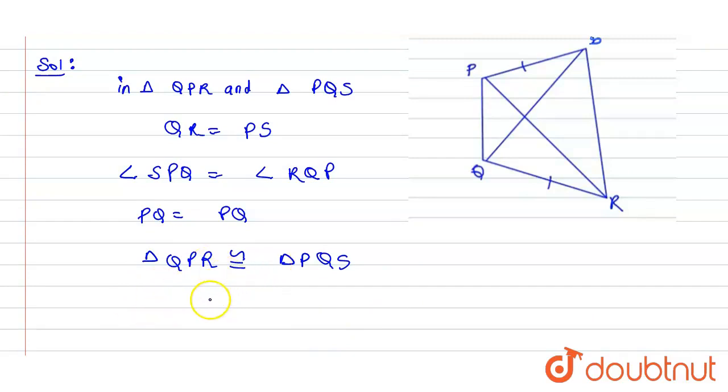Now by using congruent triangle property that corresponding part of congruent triangles are equal, therefore this PR will be equals to QS using CPCT, that is corresponding part of congruent triangles.